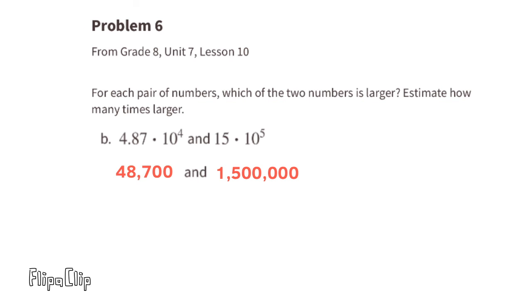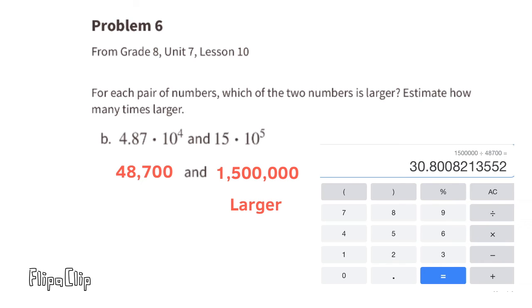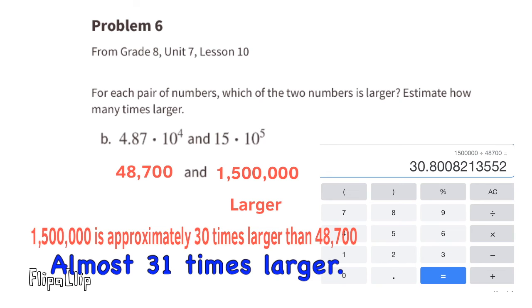Part B: These are equivalent to 48,700 and 1,500,000. 1,500,000 is obviously larger than 48,700. Using a calculator, 1,500,000 is almost 31 times larger than 48,700. That means that 15 times 10 to the fifth power is almost 31 times larger than 4.87 times 10 to the fourth power.